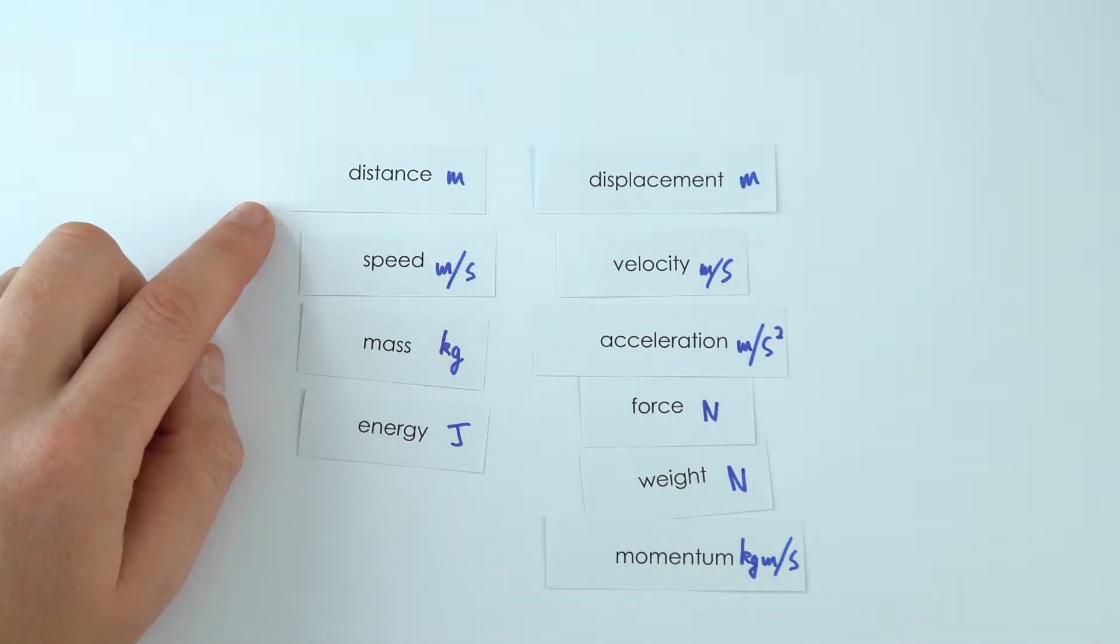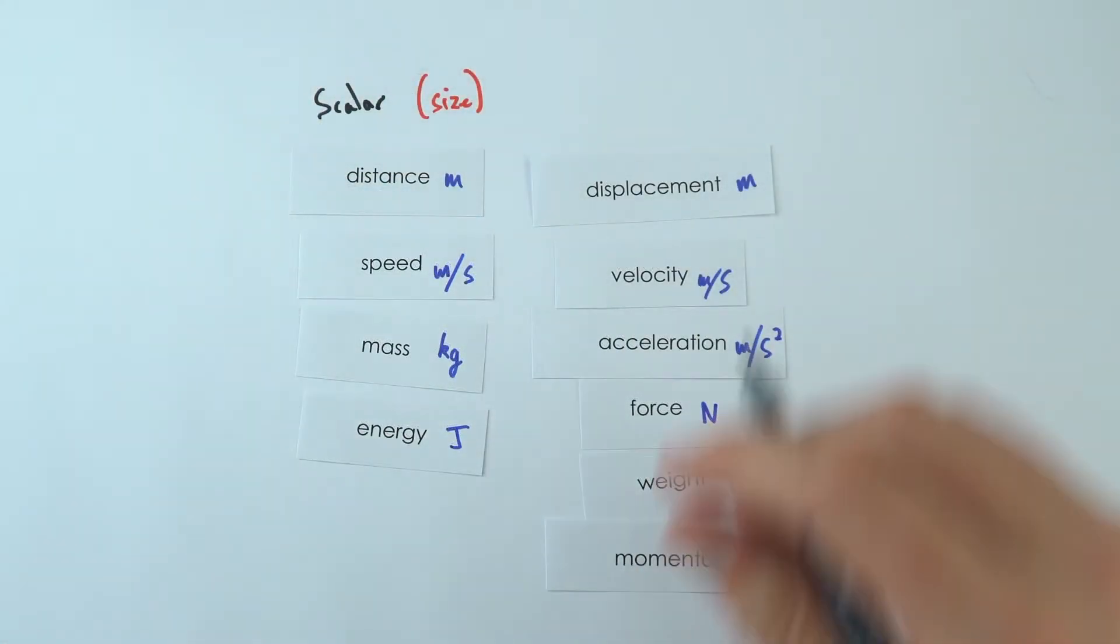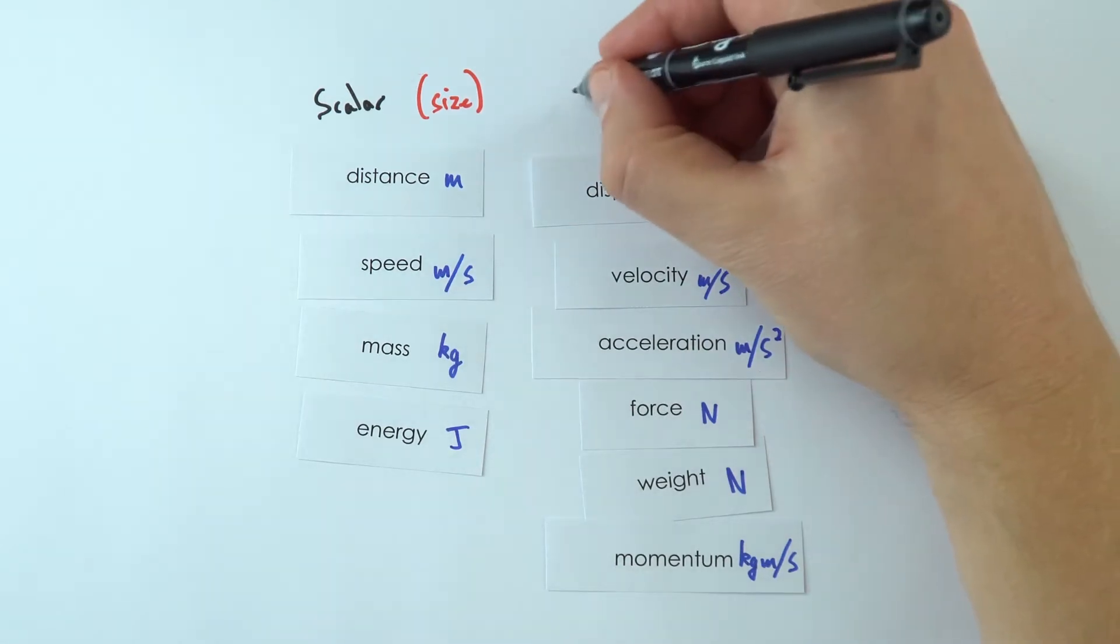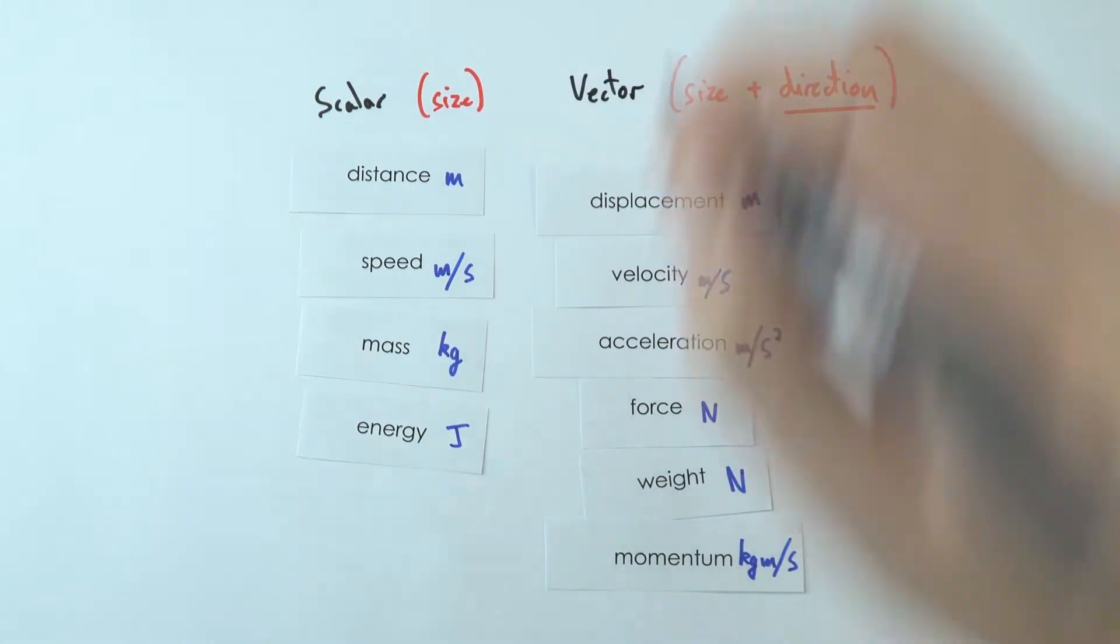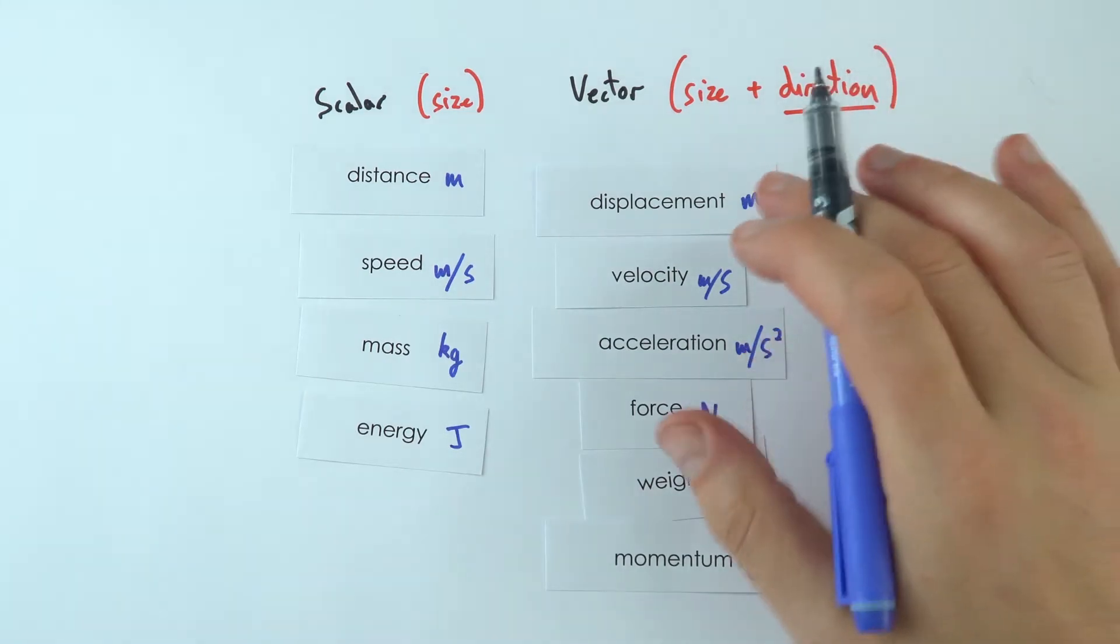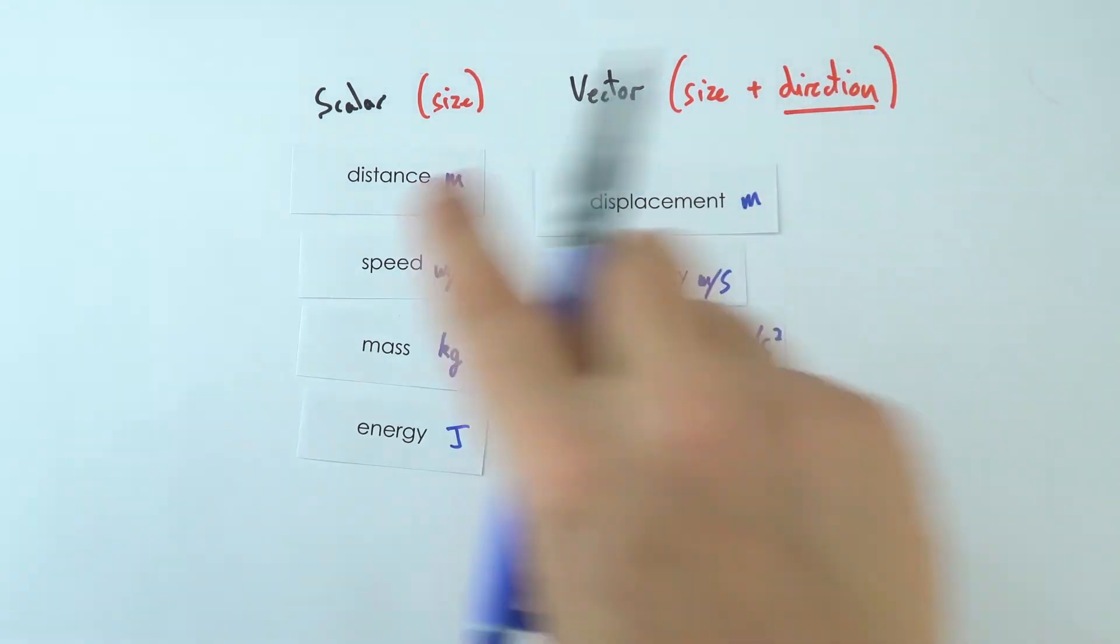And what we do is things which just have a size are called scalars, and things where we need to look at the direction as well are what we call vector quantities. And in actual fact, all the different quantities you're going to be learning about in physics can fit into one of these two categories.